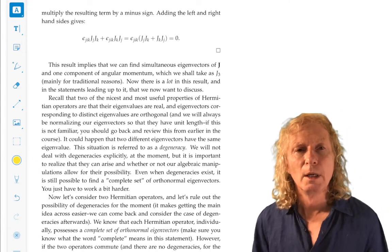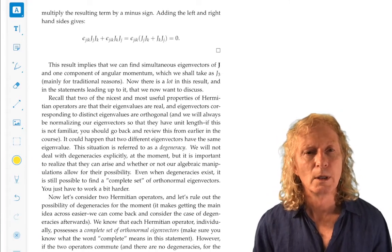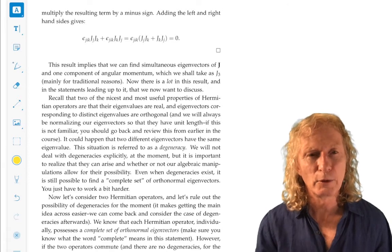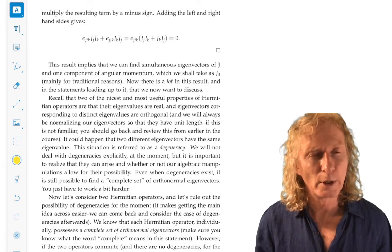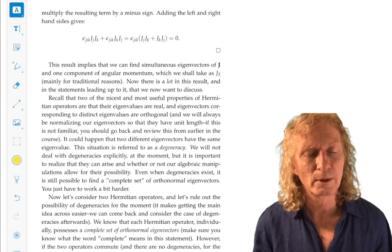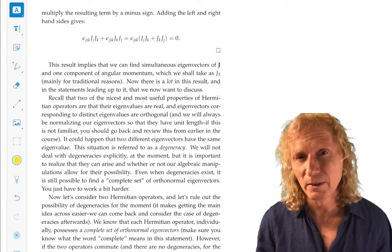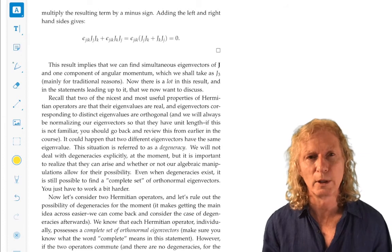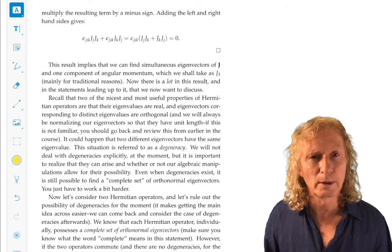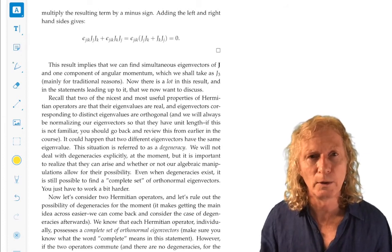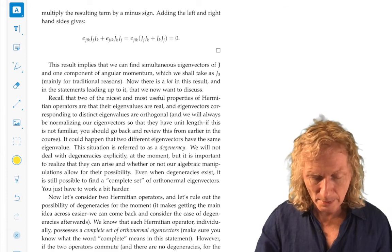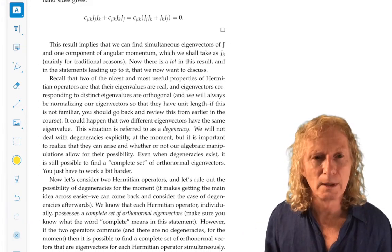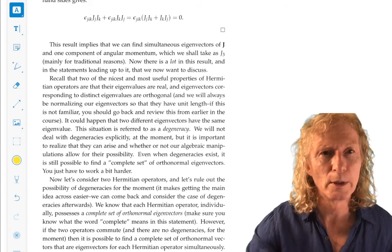So I included a few more steps to work that out if you're interested. But that's a crucial result. And it's what I said. We can choose J squared commutes with J3. So there exists a set of common eigenvectors for both J squared and J3. It's up to us to construct them, find the eigenvalues, and so on.